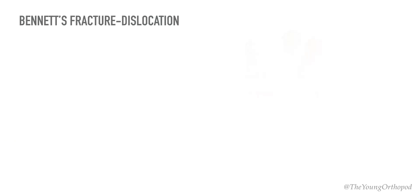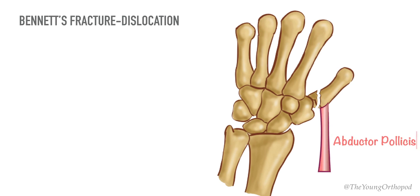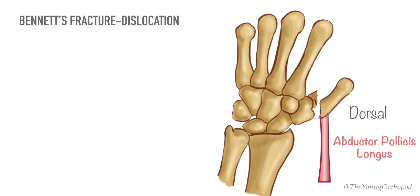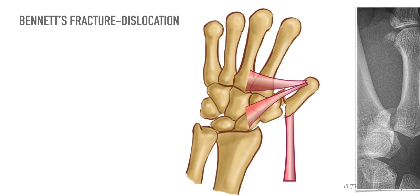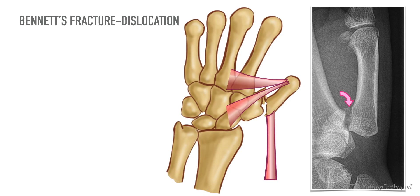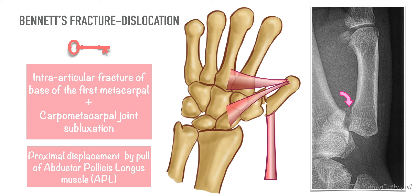The Bennett's fracture-dislocation is named after Edward Halloran Bennett. It is an oblique intra-articular fracture of the base of the first metacarpal with subluxation of the carpometacarpal joint. The distal metacarpal fragment is displaced in a proximal, radial, and dorsal direction by the pull of the abductor pollicis longus muscle. Radiographs show a small triangular fragment remaining in contact with the medial edge of the trapezium while the remainder of the thumb is subluxated proximally.